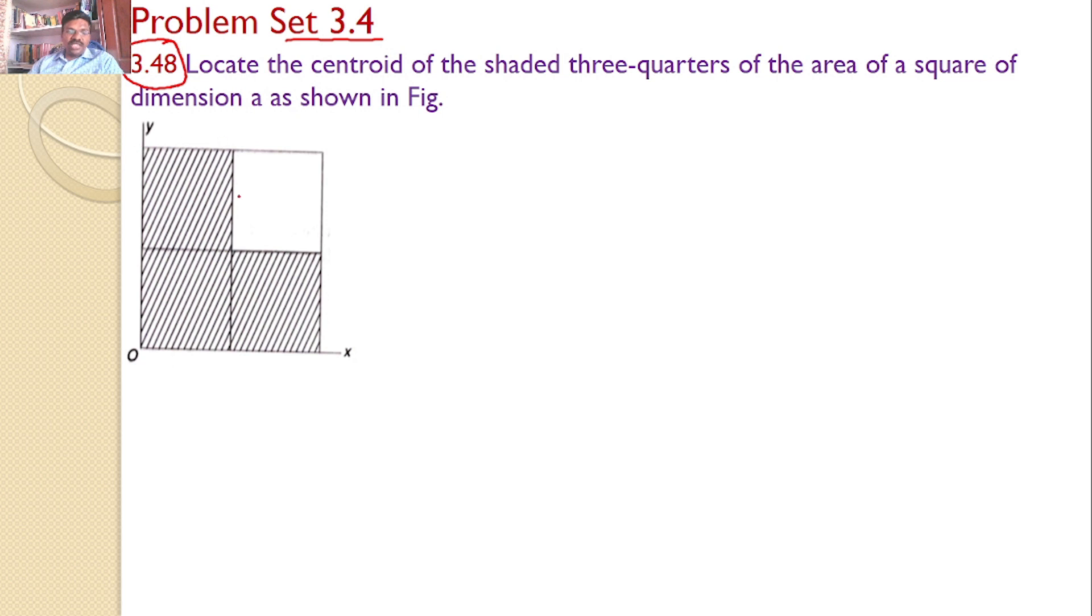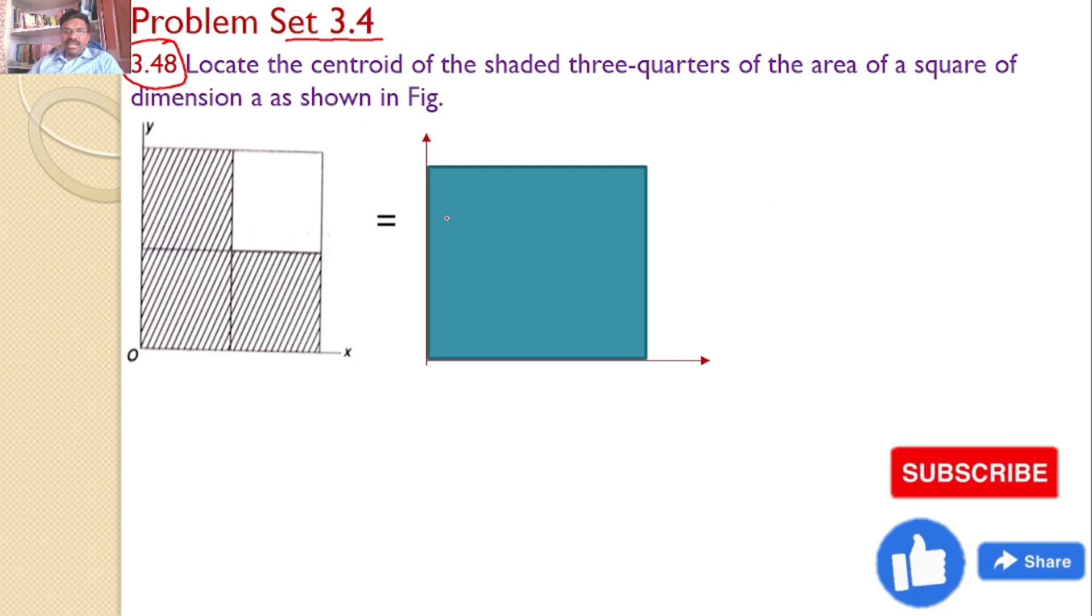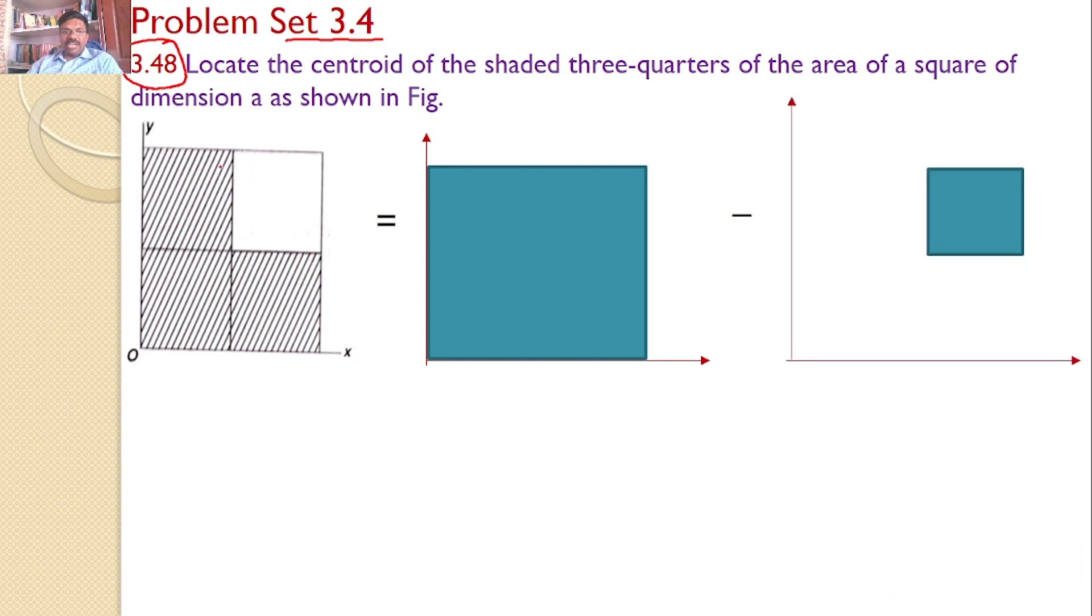Our interest is to find the centroid for the three-quarters of this area A. What I will do is divide this into total area minus this small rectangle. This equals, with reference to the same x-y axis, the total area minus the second area. I will try to subtract with reference to the same x-y axis.